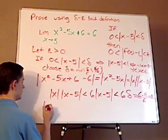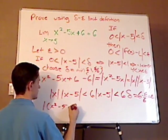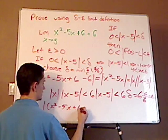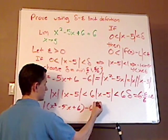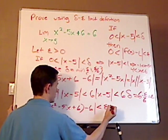So, let me rewrite that. |x squared minus 5x plus 6 minus 6| less than epsilon. So, therefore, it's true.